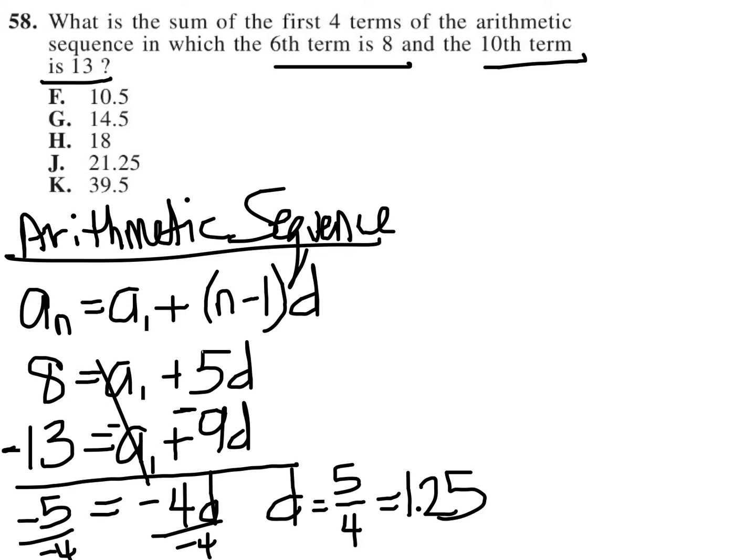So now that I know what d is, I want to figure out what are the terms in the sequence. If I know the 10th term is 13 and the 6th term is 8, and I know that d is 1.25, and all I care about are the first four terms, then I can work my way backward to figure out what the first four terms are by subtracting 1.25.